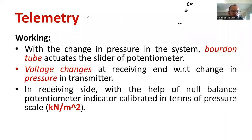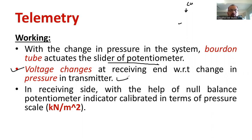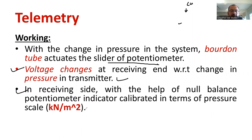It works in a simple fashion: the changes in pressure are sensed by the burden tube. The burden tube activates the slider potentiometer because all are connected. The voltage changes at the receiving end, with respect to changes in pressure, are then measured. The meter at the receiving end is calibrated in terms of pressure. At the receiving end, a null-balanced potentiometer indicator calibrated in terms of pressure scale — kilo Newton per meter square, or kilo Pascal — is used.